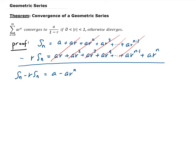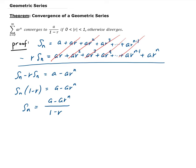Now we're going to get a formula for the partial sums in terms of N, and then take the limit of that. We can factor out S of N, so that means S of N is equal to A minus A times R to the N, all over 1 minus R.